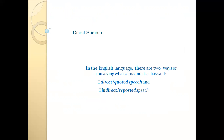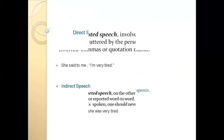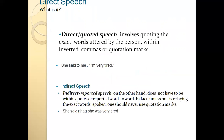In the English language there are two ways of conveying what someone has said. The first way is direct or quoted speech, and the second way is indirect or reported speech. Direct or quoted speech involves quoting the exact words uttered by the person, within inverted commas or quotation marks. In direct speech we repeat the same words that someone has said, and we usually use the verb 'say,' with the words of the speaker put in quotation marks.